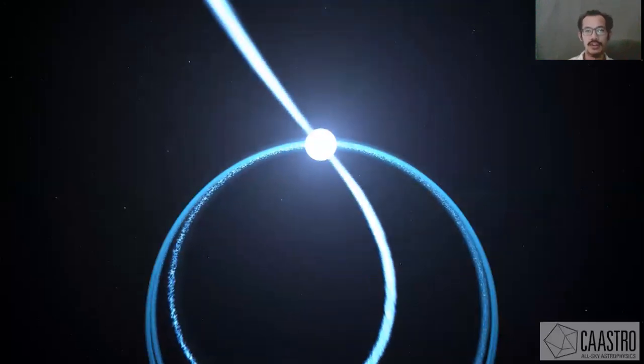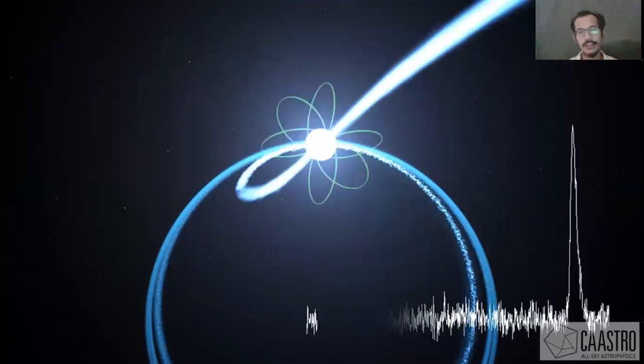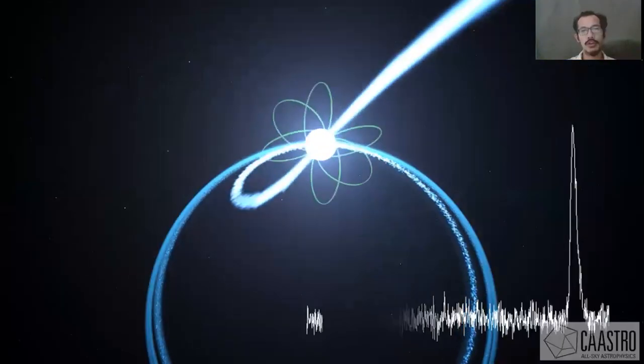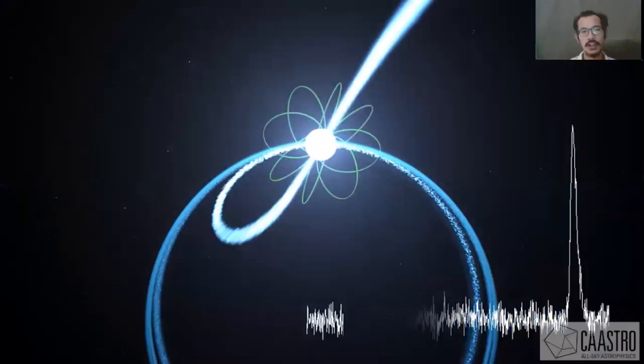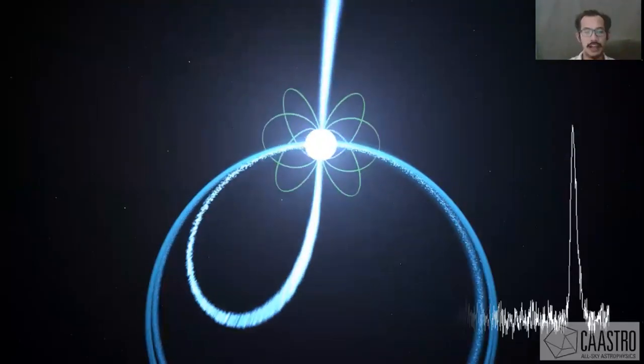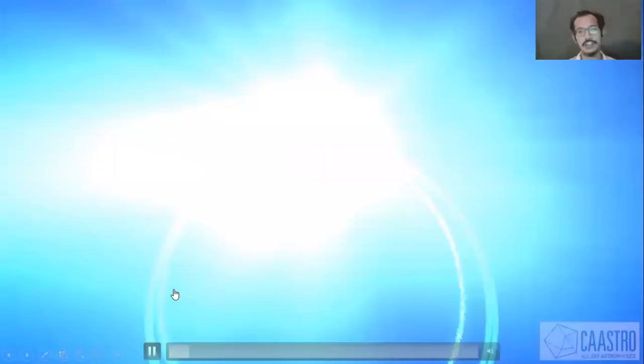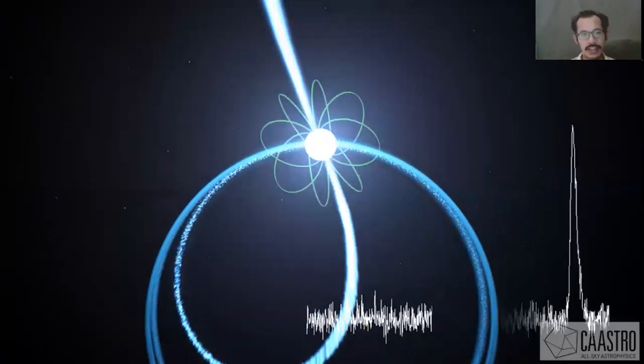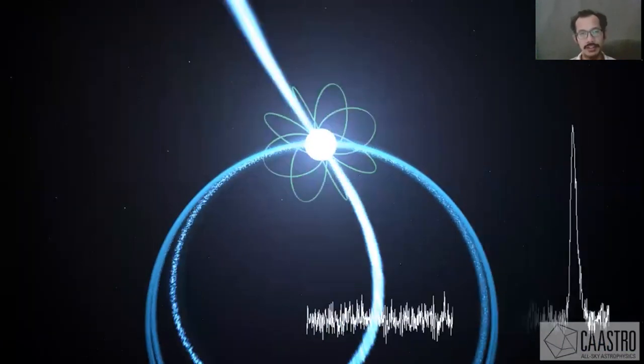Pulsars are neutron stars created when stars 10 to 20 times more massive than the sun reach the end of their lives. They explode as supernova, leaving behind this ultra-dense core with a co-rotating magnetic field. They emit beams of radiation that sweep across our line of sight, where they appear as precise and periodic flashes of radio light. They are useful in many ways. Their precise clock-like nature can be used to calibrate local atomic clocks and they can be used as navigation beacons to localize interplanetary spacecraft to within 20 kilometers in space.